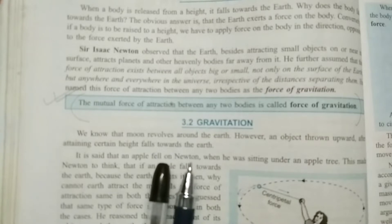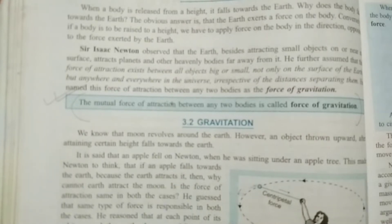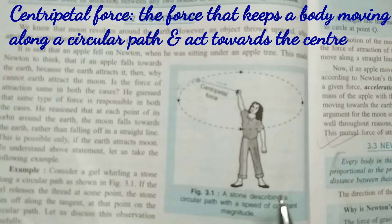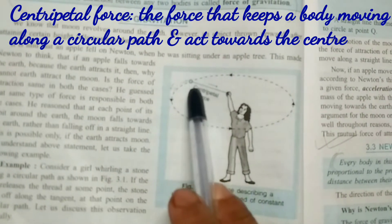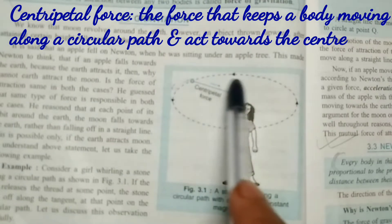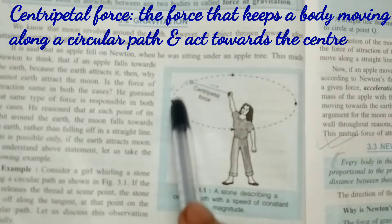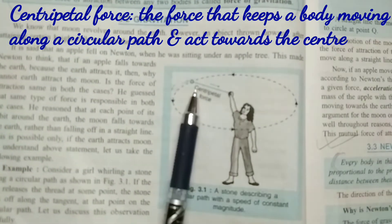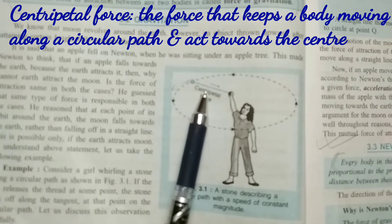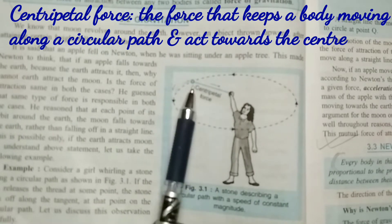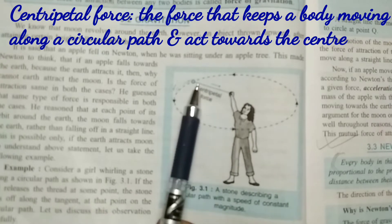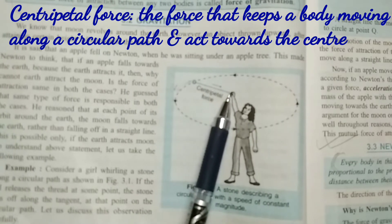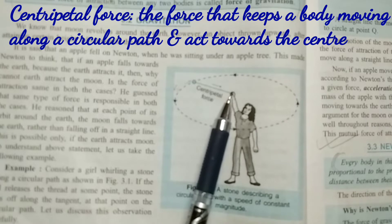I hope you have understood what is force of gravitation. Now suppose here you can see one auntie is standing, and a stone is tied with a thread. The stone is moving in a circular path. She is applying force along this direction. This is the stone, this is her hand, and this is the direction in which she is applying the force.